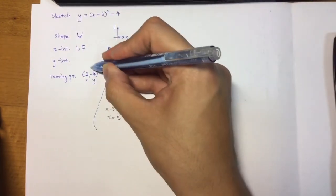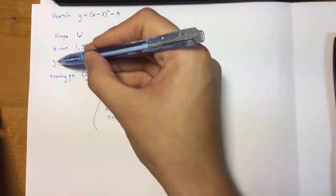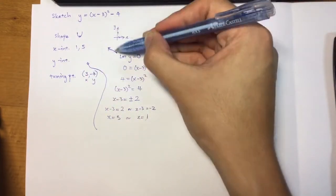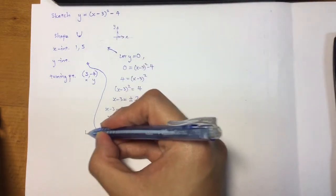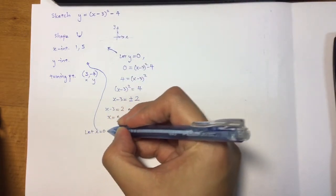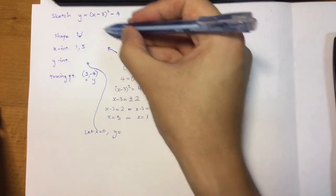Last but not least, to find the y-intercept. Vice versa. Any point along here has an x value or x coordinate of 0. So I let x be 0, and I see what y value comes up from it.